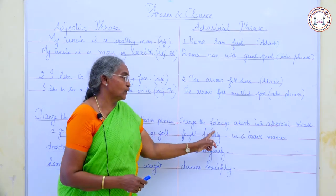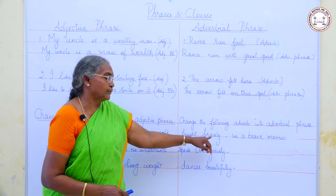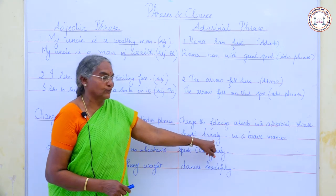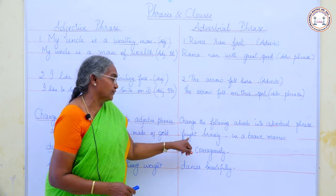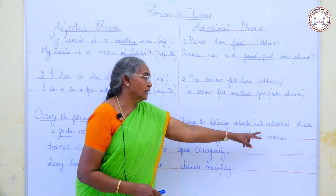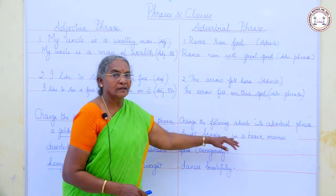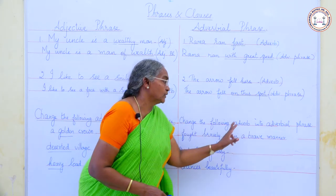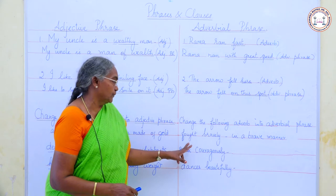Change the following adverbs into adverbial phrases. 'Fought bravely.' 'Bravely' is the adverb — a single word qualifying the verb. Now change this adverb into an adverbial phrase: 'In a brave manner.' Here, the group of words qualifies the verb.